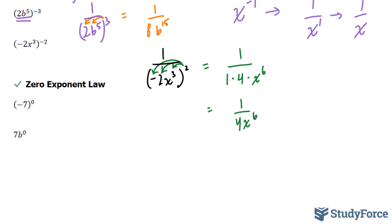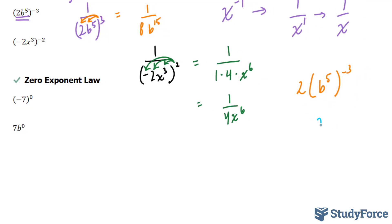One further example: consider 2b to the power of 5 to the power of negative 3, without full brackets around the 2. In this situation, the negative 3 belongs exclusively to b to the power of 5, so the 2 is unaffected. You write the 2 at the top, and at the bottom you have b to the power of 5 to the power of positive 3, giving you 2 over b to the power of 15. Notice the difference between this answer and the previous bracketed example.